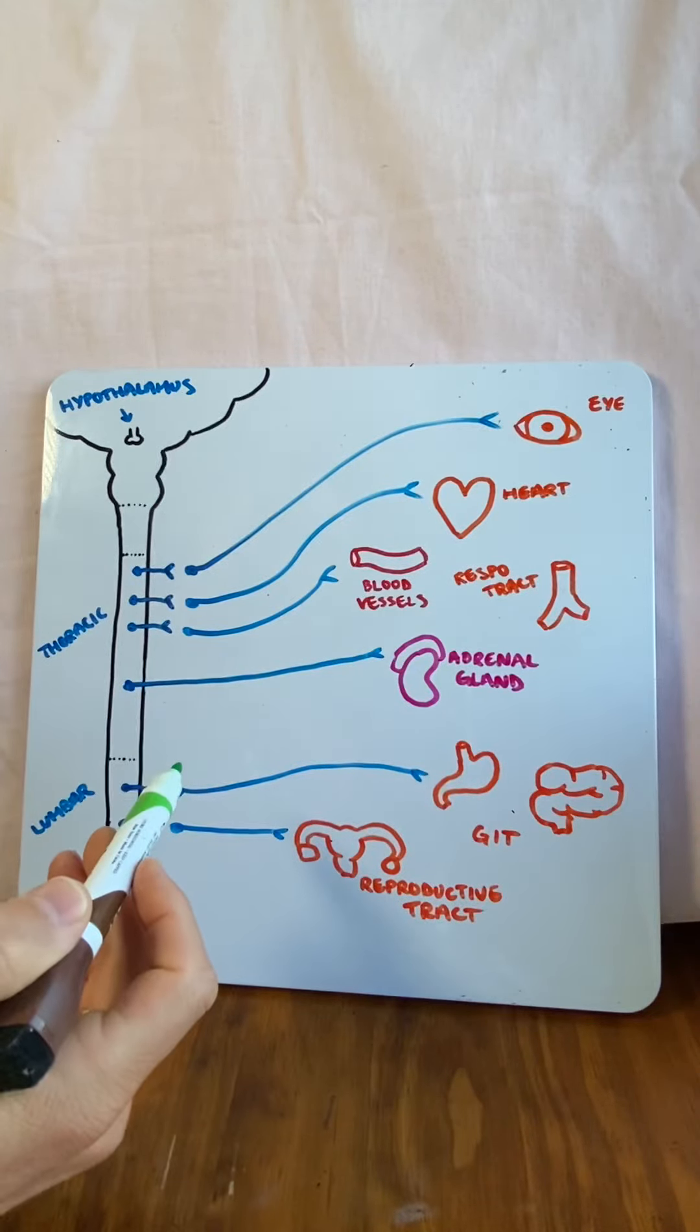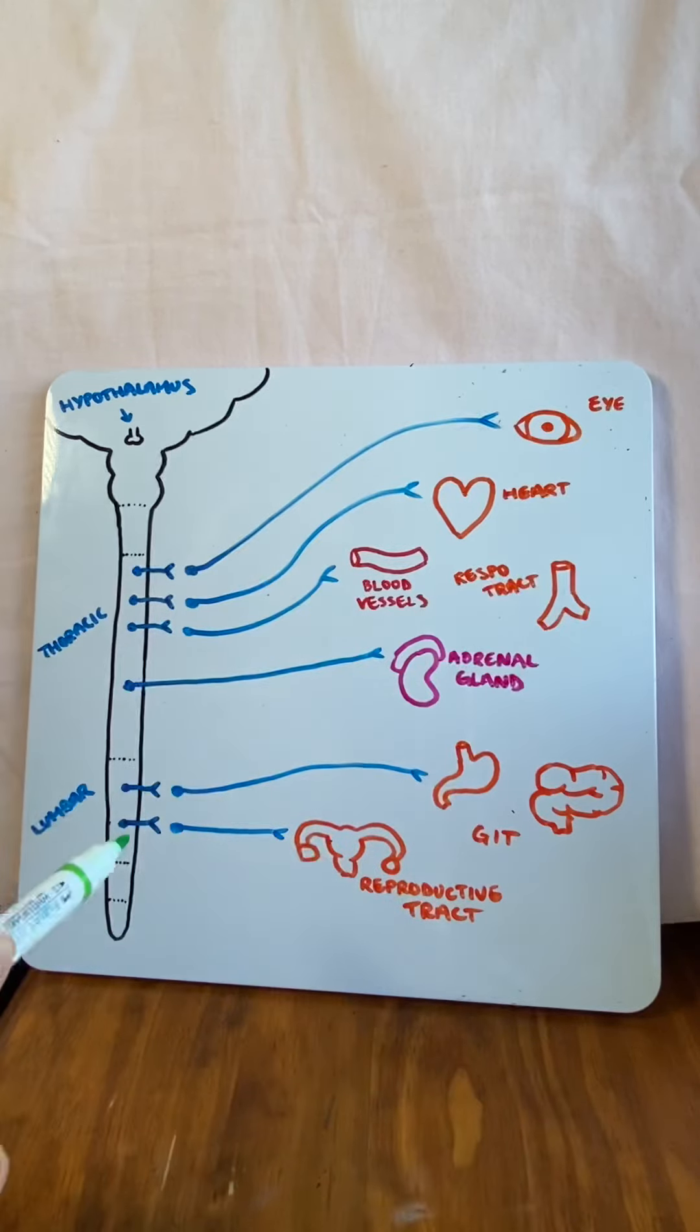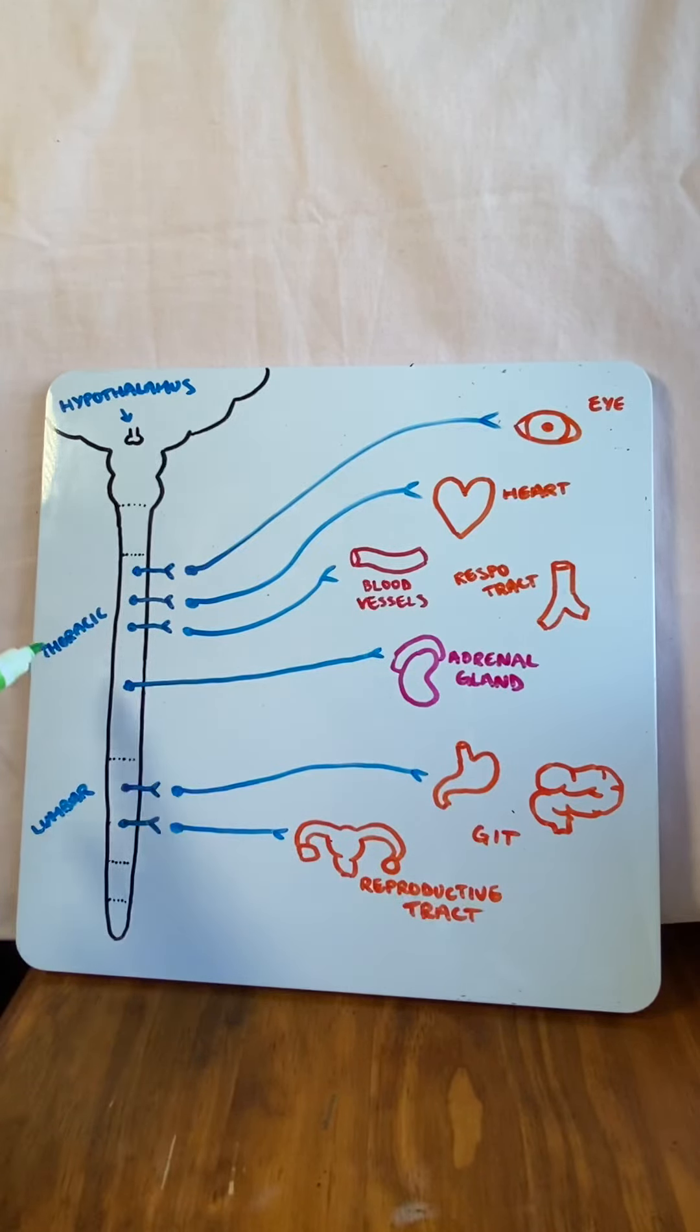Now, the sympathetic nervous system is mediated by the hypothalamus. The hypothalamus is the master regulator of the fight or flight response and sends signals down the spinal cord to the neurons that will shoot out. And you can see all the neurons of the sympathetic nervous system come out of the thoracic and lumbar region from T1 to L2.